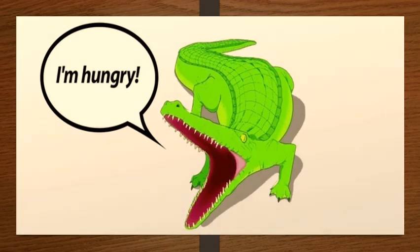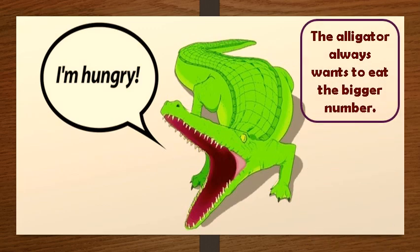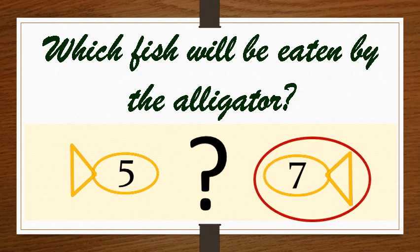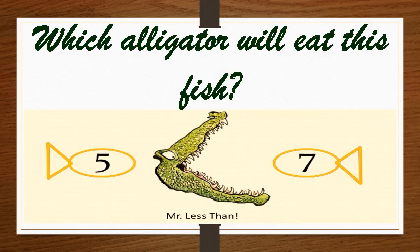Mr. The alligator is feeling very hungry. And remember, it always wants to eat the bigger number. Fish number 5 and fish number 7 are served on their breakfast table. Children, which fish will be eaten by the alligator? Fish number 7. And which alligator will eat this fish? Mr. Less Than alligator will eat fish number 7 as it is greater than fish number 5.